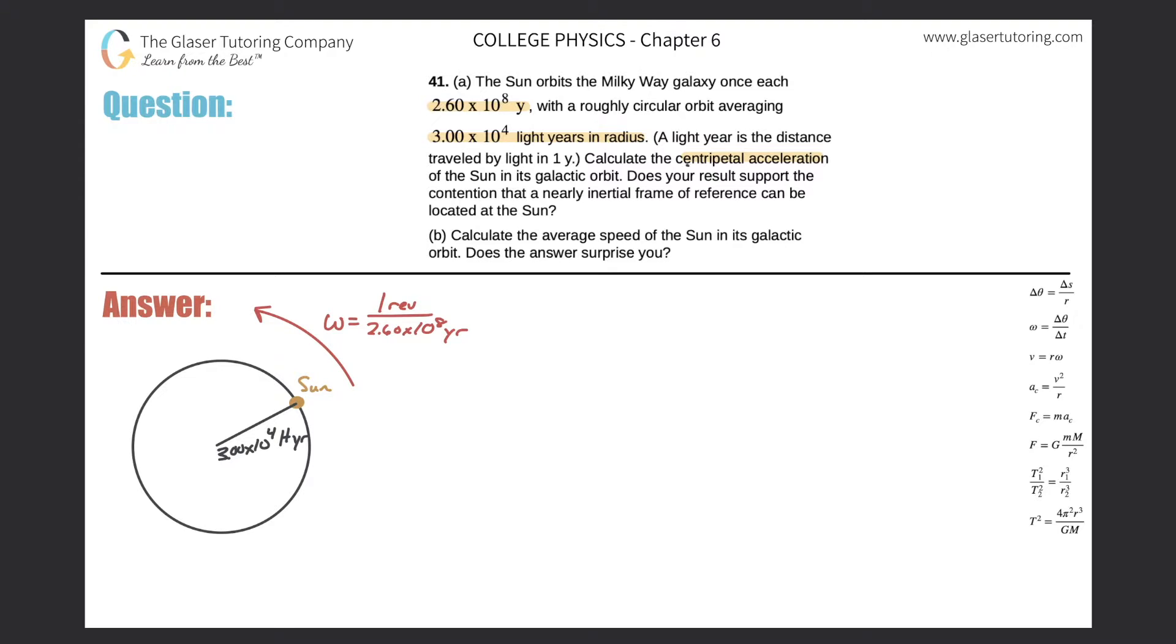So it wants to calculate the centripetal acceleration. So why don't we start with this formula, the centripetal acceleration is equal to the linear or tangential velocity squared divided by the radius. Now, do we know the linear or tangential velocity? No, we don't, but we do know the angular velocity because they did tell us the time it takes to make one revolution. So therefore now I'm thinking, is there a connection between linear velocity and angular velocity?